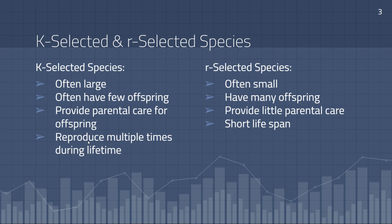R-selected species are quite different. They are often small and have many, many offspring, but typically provide very little parental care. Quite often they have a short lifespan and die after they reproduce — they pass on their genes to the next generation, and then that marks the end of their lifespan. In the wild, many species fall somewhere within the spectrum of being K-selected or R-selected, rather than fitting clearly into one of these two categories.